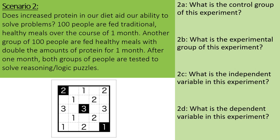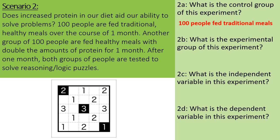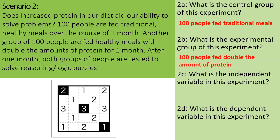Question A, what is the control group? The control group is the normal condition. In this case, it's the people that are fed the traditional meals. Part B, what is the manipulated or experimental group? What's manipulated is that the 100 people are fed double the amount of protein.